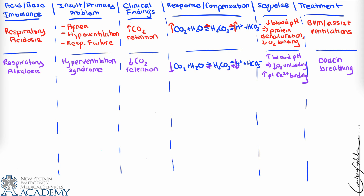Treatment for respiratory alkalosis is to coach the patient's breathing. This is the only instance where we'd suggest slowing a patient's breathing down in a controlled way. We must be sure we're making this recommendation only when there's no actual breathing problem or tachypnea from a metabolic issue. This patient will likely have a pulse ox of 100%, clear lung sounds, and no other respiratory or metabolic complications. Coaching breathing allows more CO2 to be retained, shifting the reaction back and restoring resting blood pH.